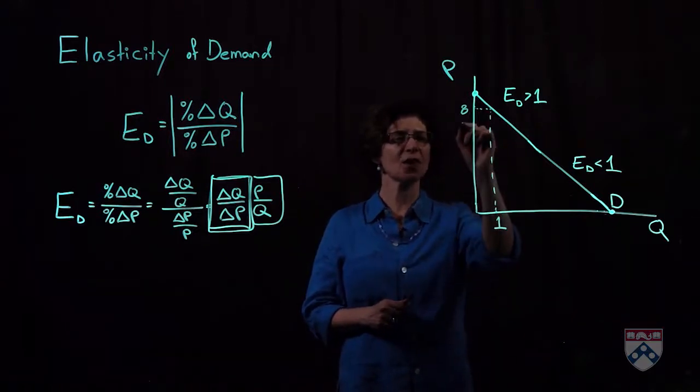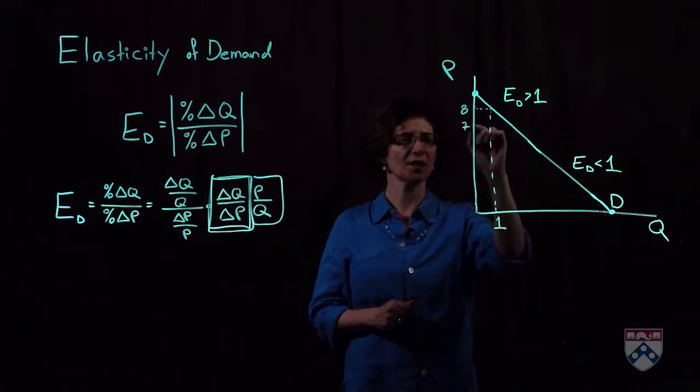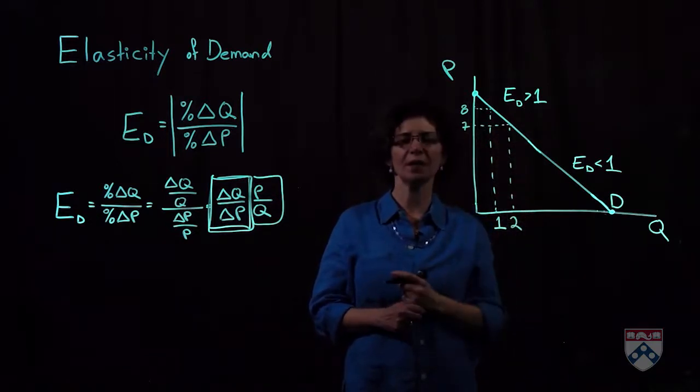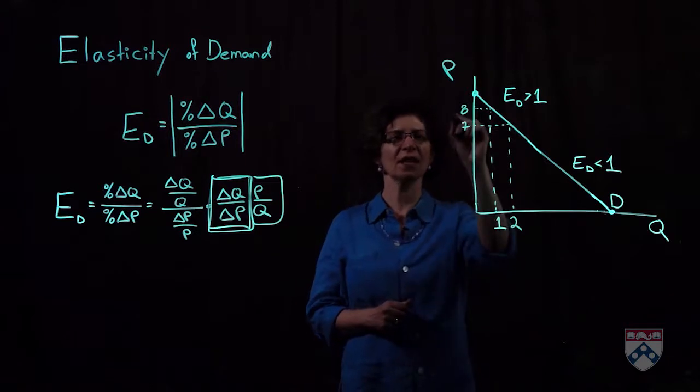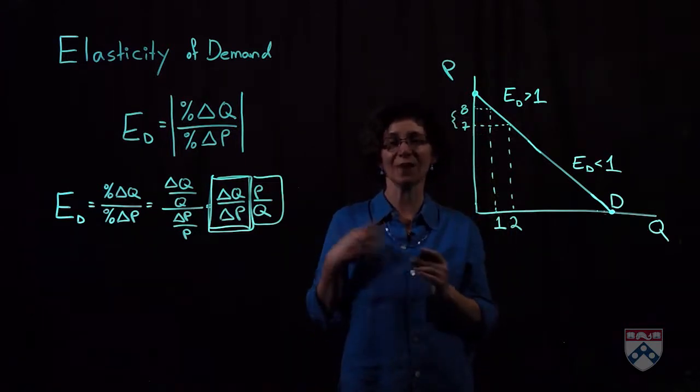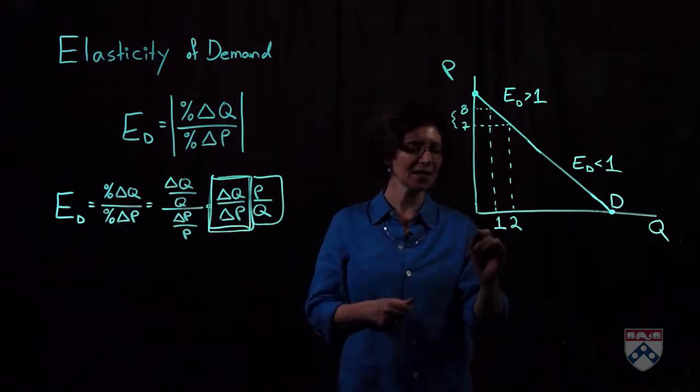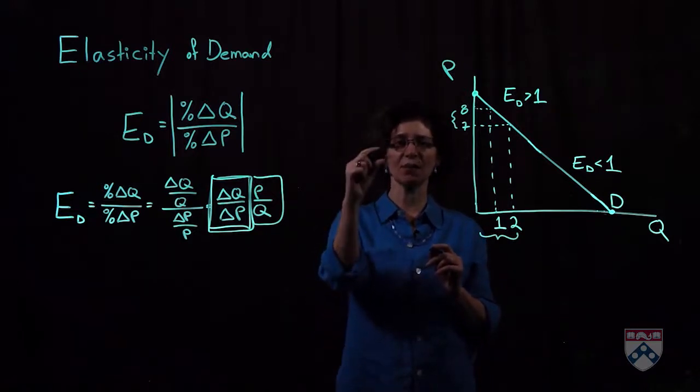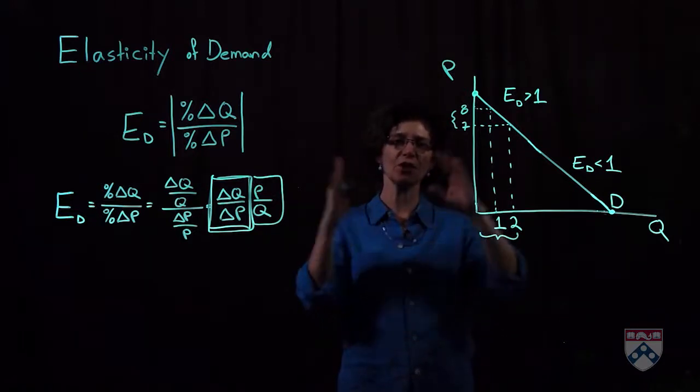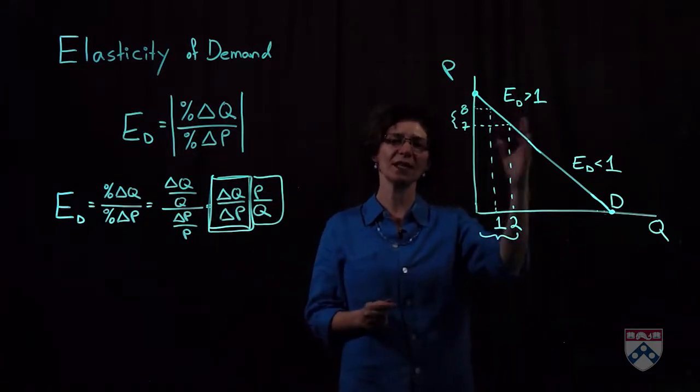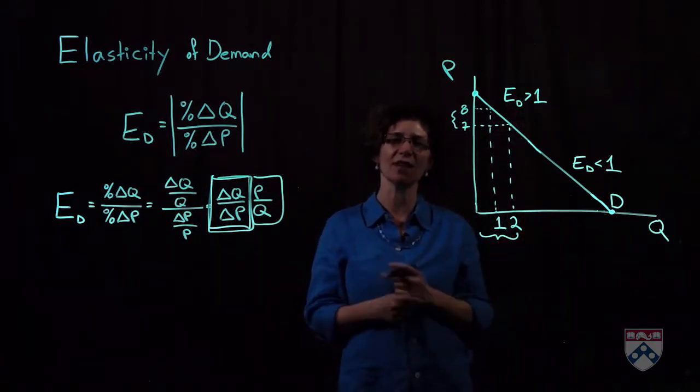And suppose the price drops to $7 per pound, and now two pounds are being bought in the market. A relatively small change in terms of price, a change of about 10%, has doubled the quantity of mangoes from one to two. So again, a relatively small change in price brought us a big responsiveness in terms of quantity, which means elasticity of demand is greater than one.